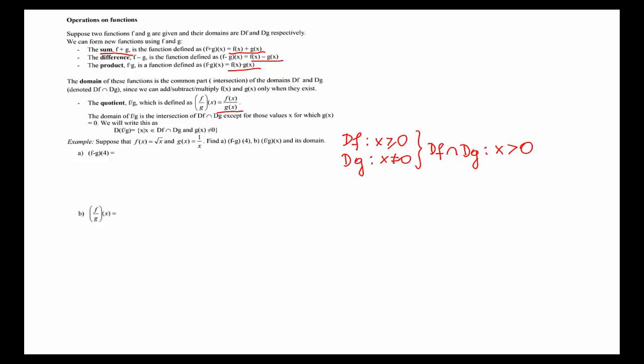So, in the first part, I'm to compute f minus g at 4, and by definition, this is f of 4 minus g of 4, and that is square root of 4 minus 1 fourth, or 2 minus 1 fourth, which is 7 fourths.